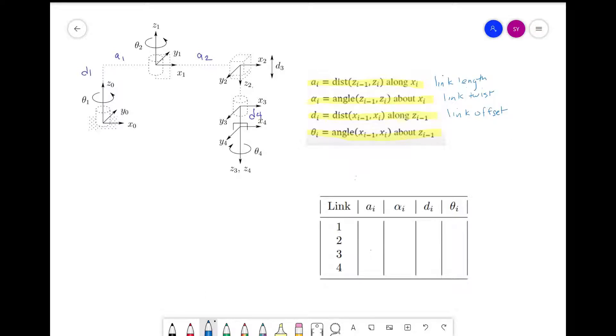This is also known as the joint offset. And if the joint is revolute, then theta is variable.